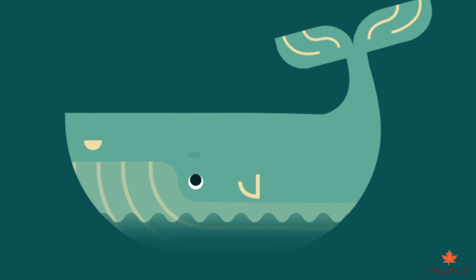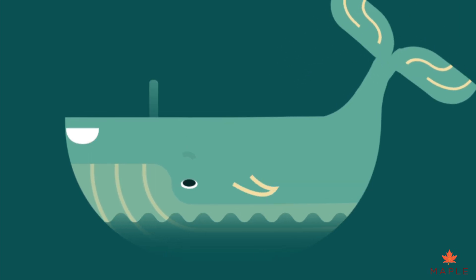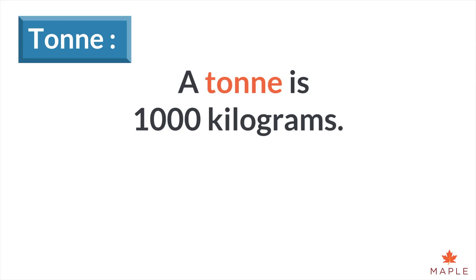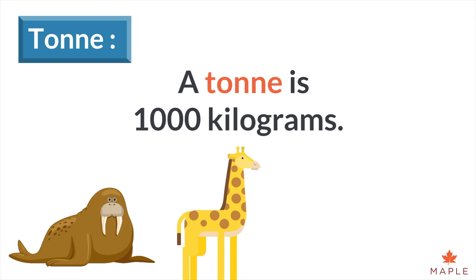Some objects are much heavier and weigh over a ton. A ton is a thousand kilograms — the weight of a car, a walrus, a giraffe, or a small car.